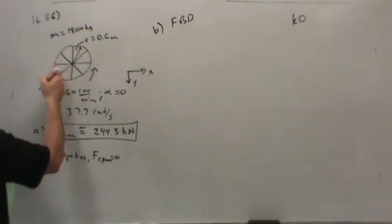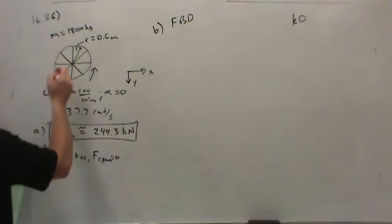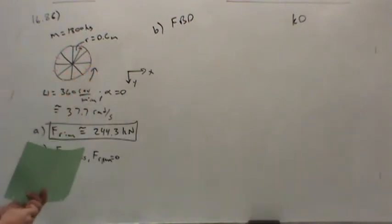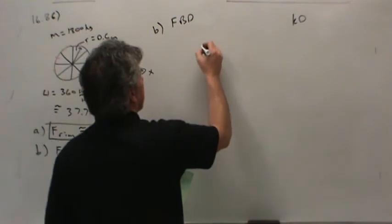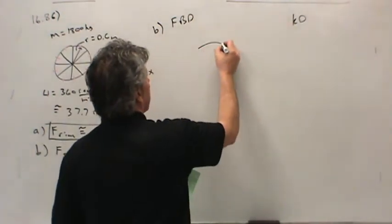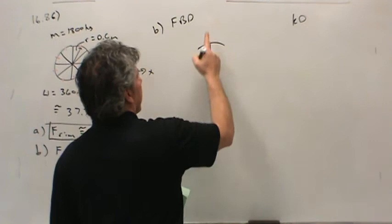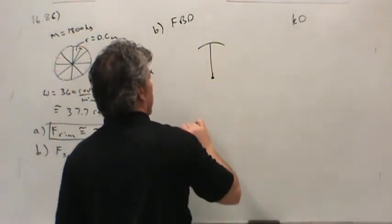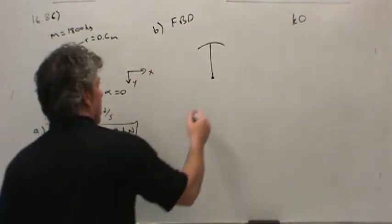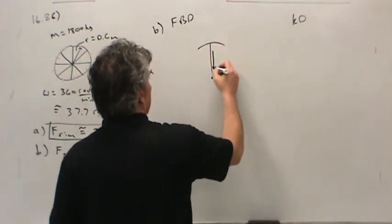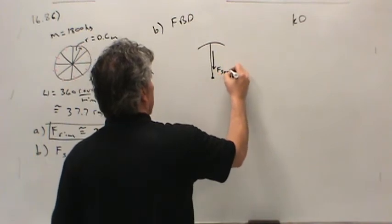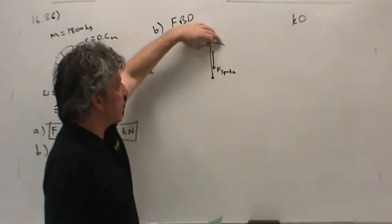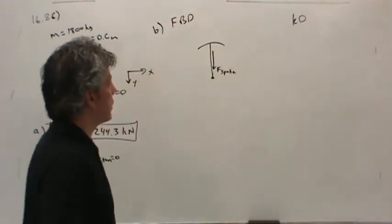In other words, basically, if I think about it this way, this spoke supports a section of the rim. In fact, it supports an eighth of the rim. Another way to look at this is that an eighth of the rim, let me draw it. Here's my eighth of the rim. It's trying to fly away. In other words, it's trying to move on a straight line. But this spoke has to apply a force to this segment of mass in order to keep that segment of mass of the rim accelerating normally in this direction, you see.